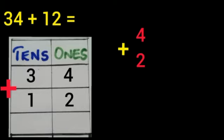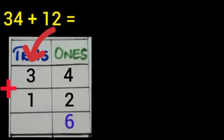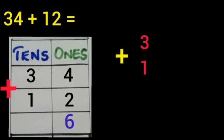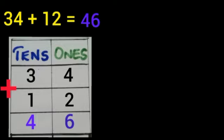So we have to write 6 here. After adding the ones, we should add the numbers in the tens column. Which are the numbers in the tens column? Yes, 3 and 1. 3 plus 1 is same as 4. So we can say 34 plus 12 is same as 46.